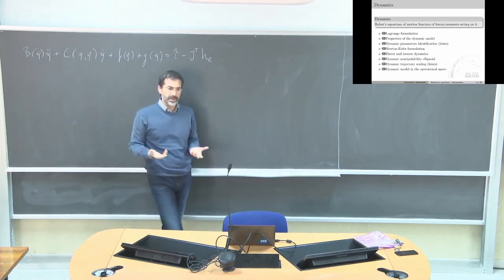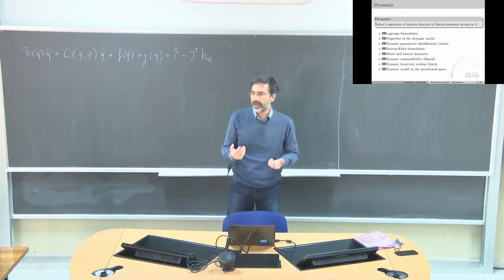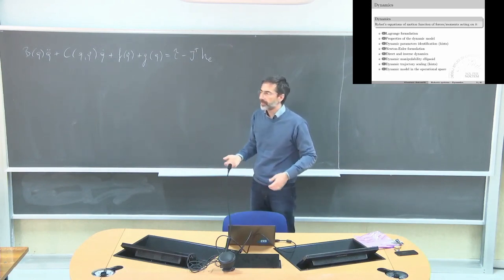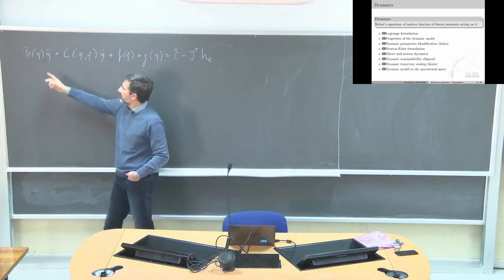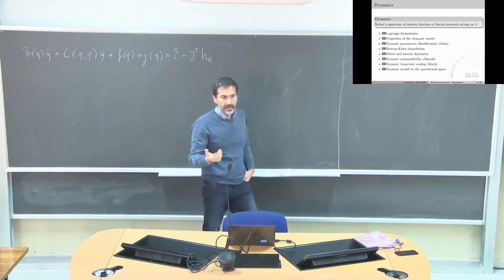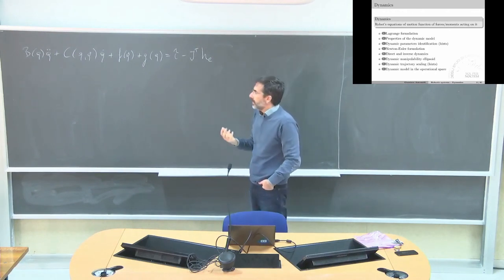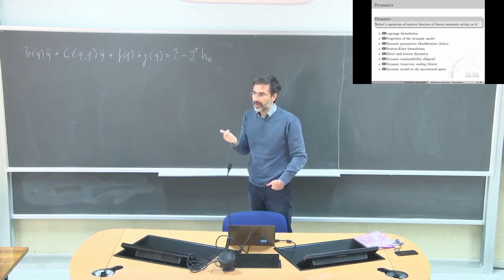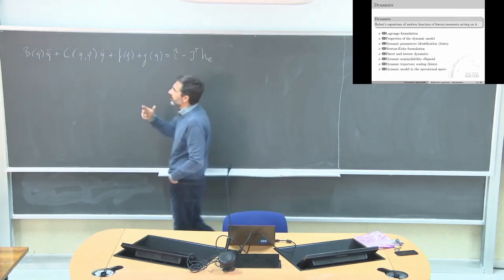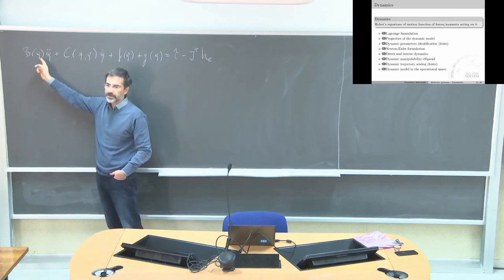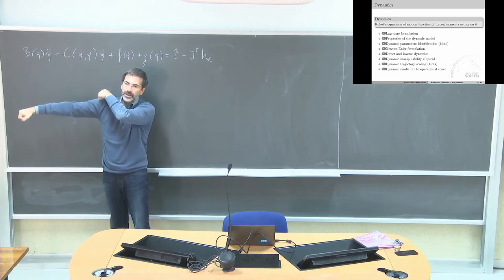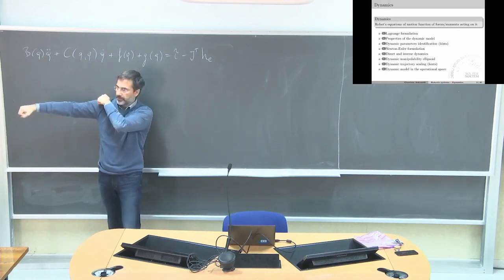The acceleration is now a vector of joint accelerations of dimension n, where n is the number of joints. We have a mass matrix B, which is an n-by-n square, positive definite, and symmetric matrix. It is configuration dependent — when my robot is in one configuration versus another, the inertia seen is different.